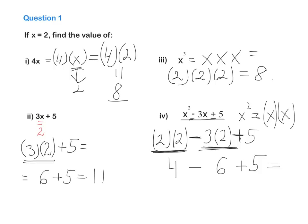Now we have 4 minus 6 plus 5. Minus and plus are on the same level in our pyramid and they are equally important. Don't do addition first if subtraction comes first. So 4 minus 6 is minus 2, plus 5, and minus 2 plus 5 is 3. Done. Take it down and do your copies, please.